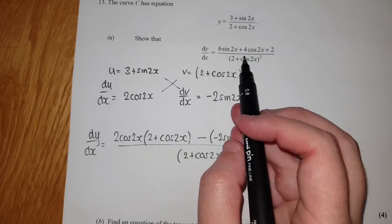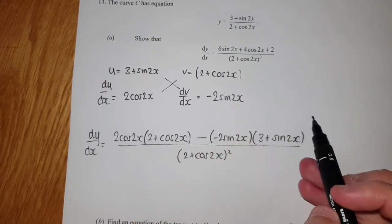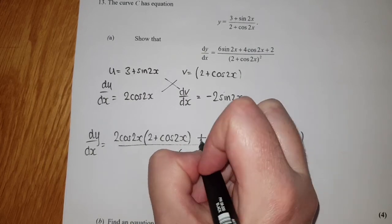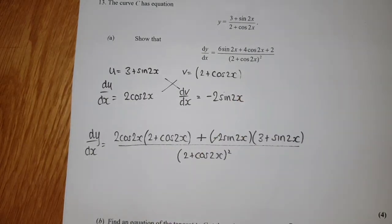If I'm doing minus times a minus, they're just going to come out as a plus, so I can just write that as a plus there.